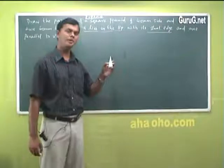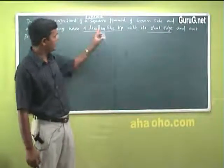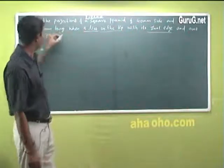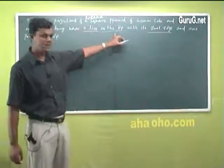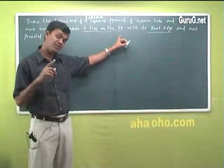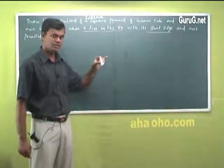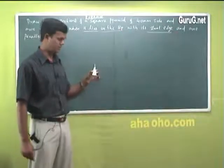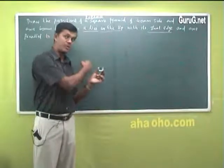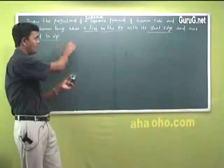And axis parallel to VP — the axis should be kept parallel to VP. Now how do I make the axis parallel to VP? See, if I hold it like this, the axis is perpendicular to VP. The question says axis is parallel to VP.